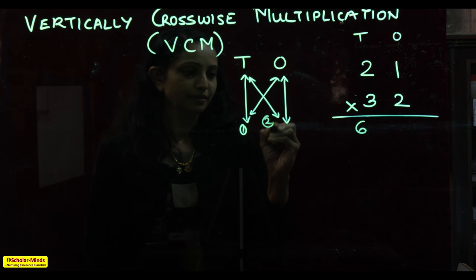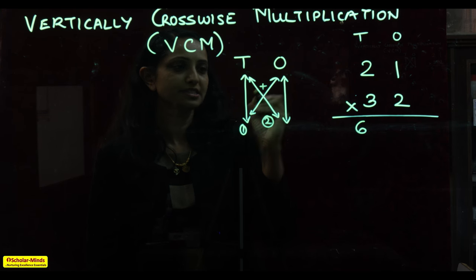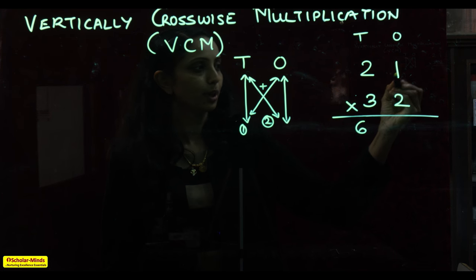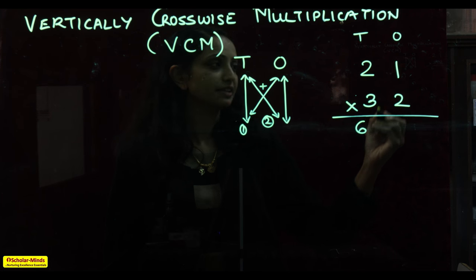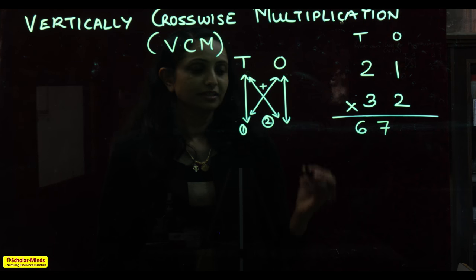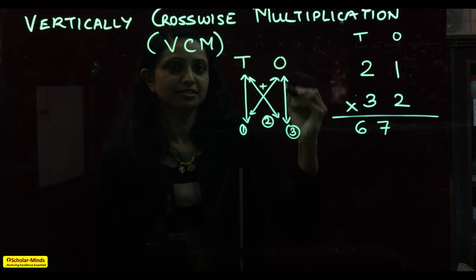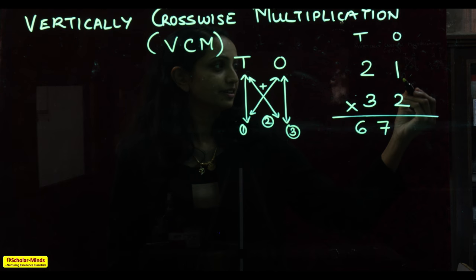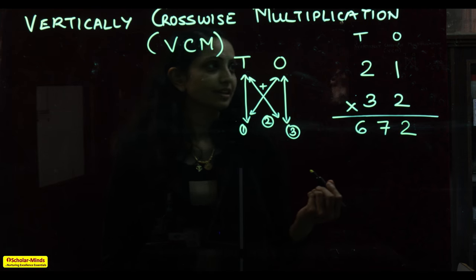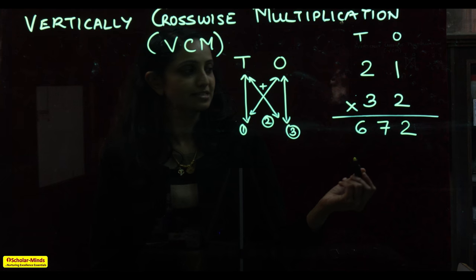The second step: take the product of the numbers crosswise and sum it up. The product of 2 and 2 is 4, the product of 1 and 3 is 3, and 4 plus 3 is 7. The last step is multiplying the digits in the ones place: 1 multiplied by 2 gives 2. Writing this out, you arrive at the solution for 21 multiplied by 32 as 672.